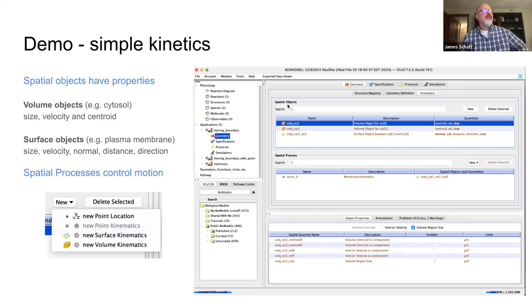To call out here, we have spatial objects and we have spatial processes. So these are new. If you notice under the geometry tab on the third sub tab is kinematics. So here we're not talking about the chemistry. We're talking about the domains themselves. So the spatial objects are volumetric objects, like say the cytoplasm or the extracellular domain.